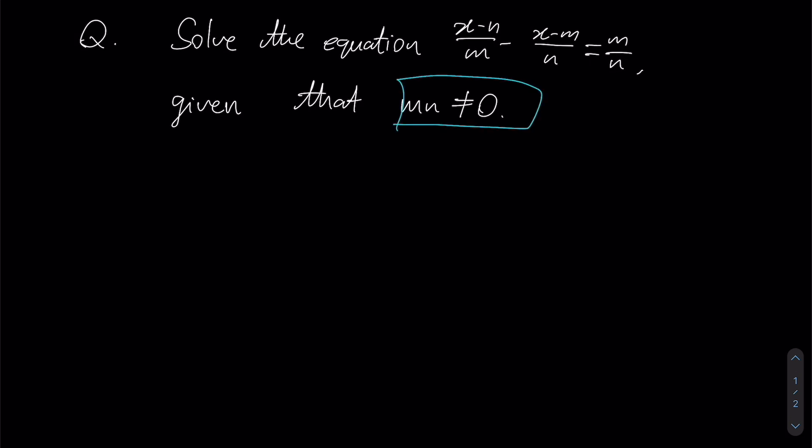The question tells us that m times n cannot be equal to 0. So we can read this down to two possible cases. That tells us m cannot be 0, that tells us that n cannot be 0 as well. So now that we have gotten both of these out of the way, let's take a look at the equation itself.